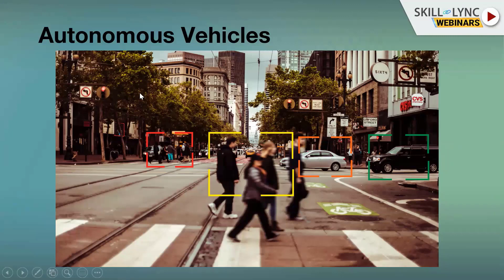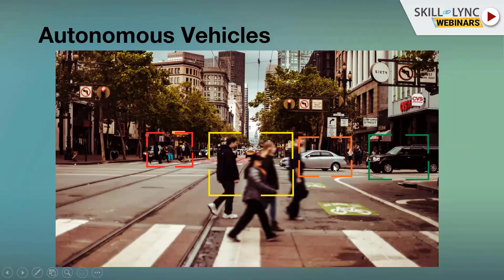Autonomous vehicles have a lot of sensors and systems inside the car that monitor the vehicle's movements as well as object movements around the car. Even without a driver, the car can make decisions to move left, right, or stay in the same lane. By 2030 most cars will have autonomous capabilities at least at level three.